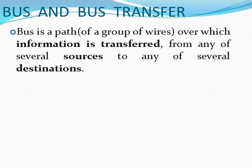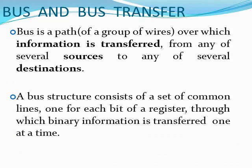Next, bus and bus transfer. A bus is a path over which information is transferred from any of several sources to any of several destinations. The bus structure consists of a set of common lines, one for each bit of a register, through which information is transferred. A more efficient scheme for transferring information between registers in a multiple-register configuration is a common bus system.